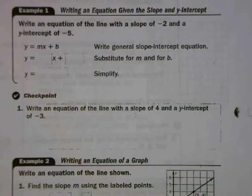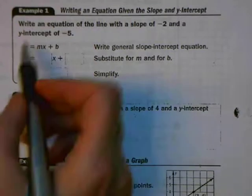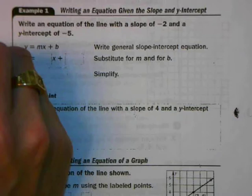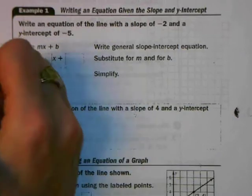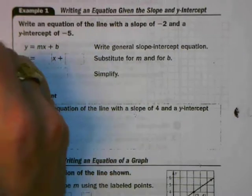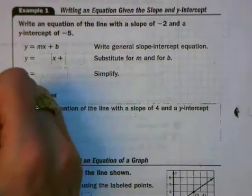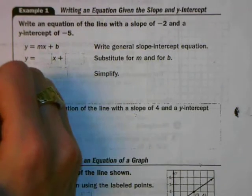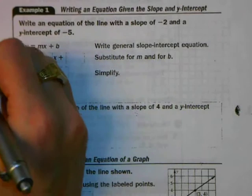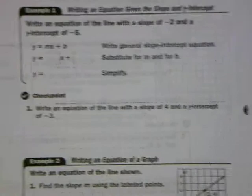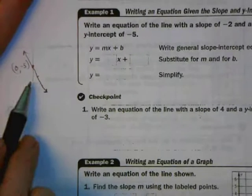Example 1 is all about how to write the equation of a line if I tell you the slope and the y-intercept. Suppose I described a line to you — I said I have this line and it has a y-intercept of negative 5, so its y-intercept is down here. And its slope is negative 2, so that's negative 2 over 1. I go down 2 over 1, down 2 over 1. I can sketch the line quite easily. What is the equation of this line that I just sketched?